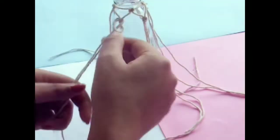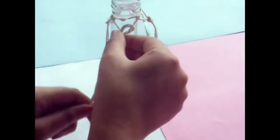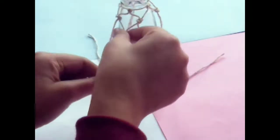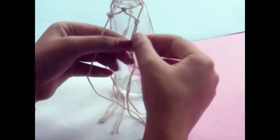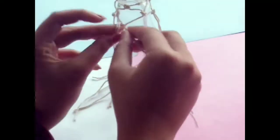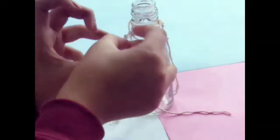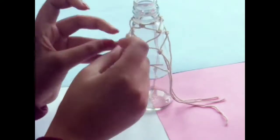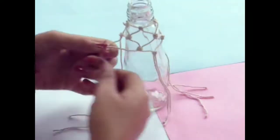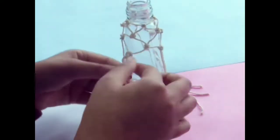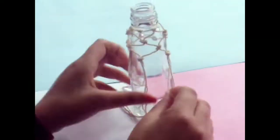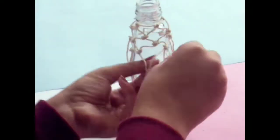You have to make a knot and repeat wrapping the twine around the bottle.